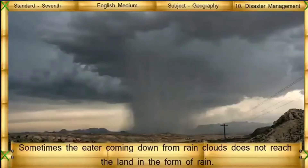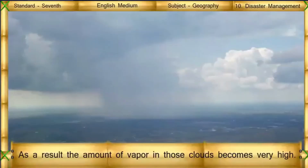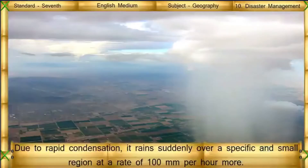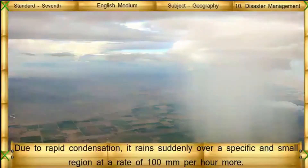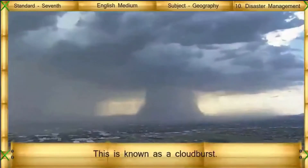Sometimes the water vapor coming down from rain clouds does not reach the land in the form of rain. Instead, due to very high temperature near the land, the vapor rises and goes back into the same clouds. As a result, the amount of vapor in those clouds becomes very high. Due to rapid condensation, it rains suddenly over a specific small region at the rate of 100 mm per hour or more. This is known as a cloud burst.